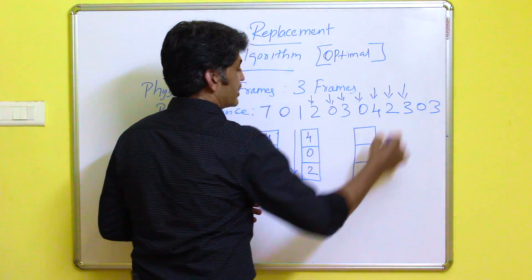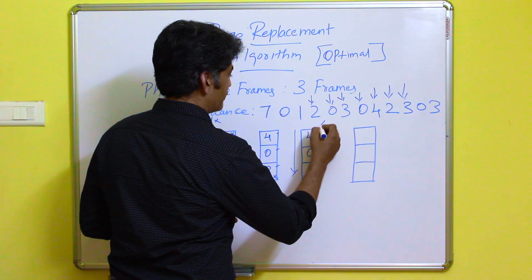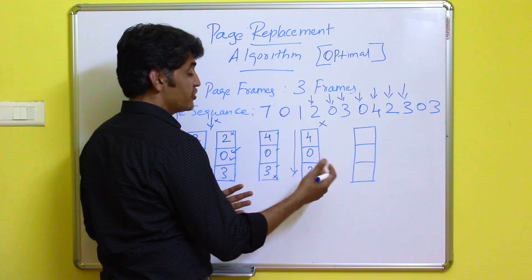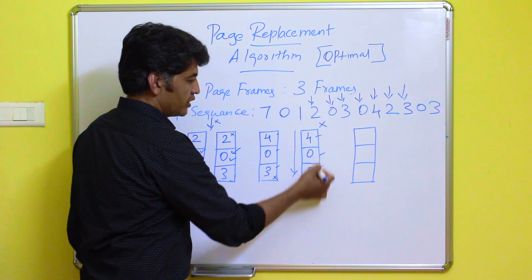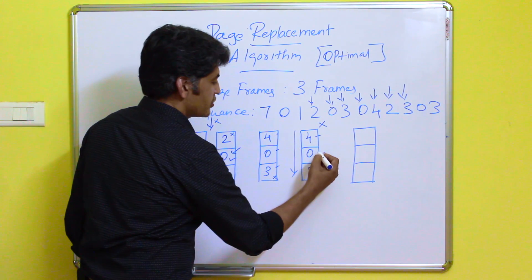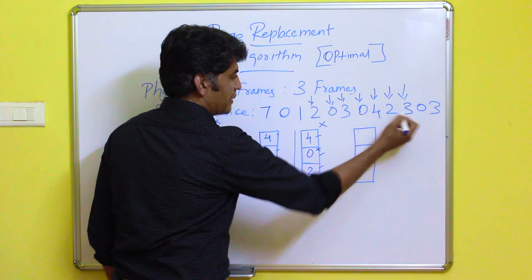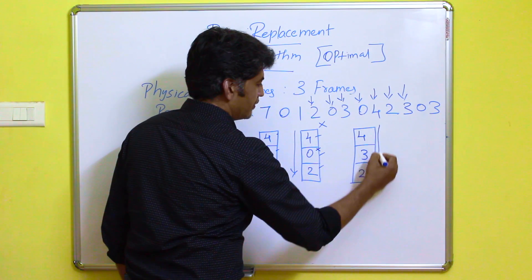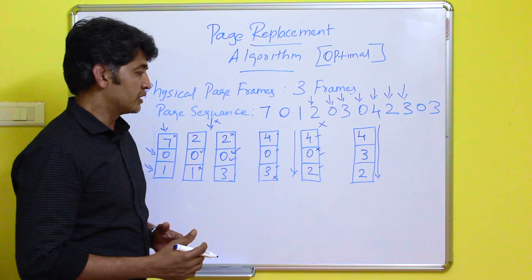Next, page 3 is required. The operating system verifies whether page 3 is in the frame — it is not, so a page fault occurs. The OS compares pages 4, 0, and 2. Page 0 is the page not used for the longest period of time, so page 0 is replaced by page 3. The frames are now: 4, 3, 2. This is how the page information is entered into the physical frames.